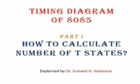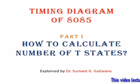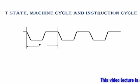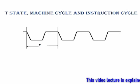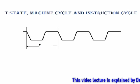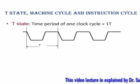Hello friends, here we are going to see the timing diagram of 8085. This is the first part of my video and in this particular video we are going to see how to calculate the number of T states of 8085. First of all, before we start, let us understand the concept of T state. One clock cycle is shown to you and T state is nothing but a time period of one clock cycle. That is called as 1T.